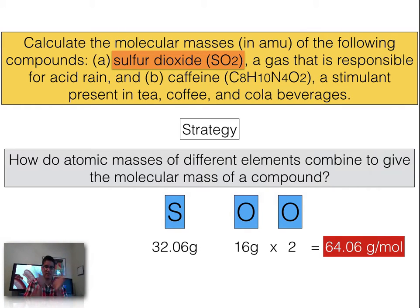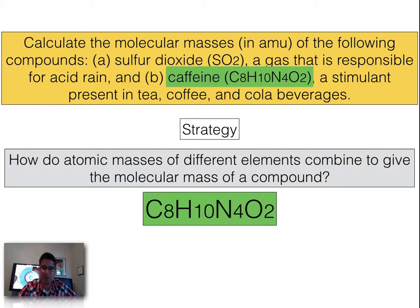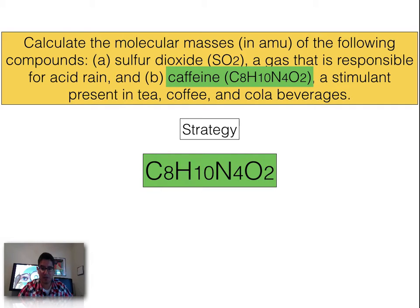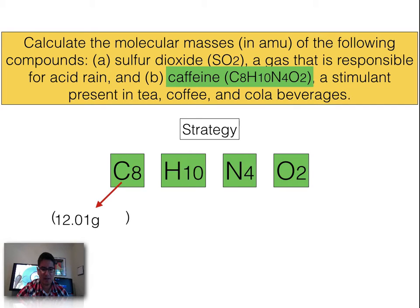So one mole of sulfur dioxide gas — if I were able to collect all the sulfur dioxide in the air, one mole of that molecule would be 64.06 grams per mole. Now let's find the molar mass of a caffeine molecule. As you can see, the caffeine molecule is considerably bigger, but it's no problem — I'll find it the same way I did sulfur dioxide. I've split up the individual atoms here.